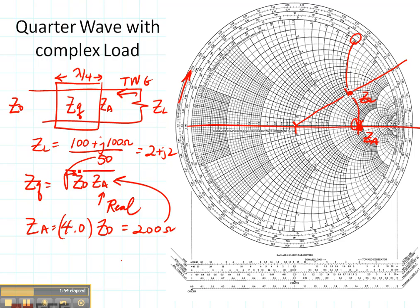So the only difference between matching a real load with a quarter wave transformer and matching a complex load with a quarter wave transformer is that you move a distance D between your load and the quarter wave transformer in order to get ZL to be strictly real.